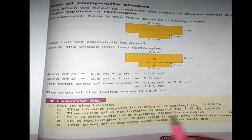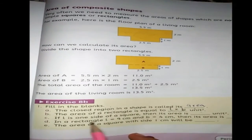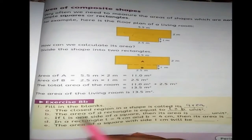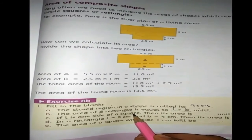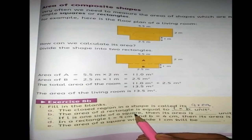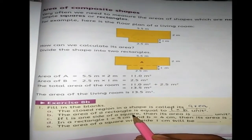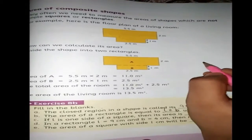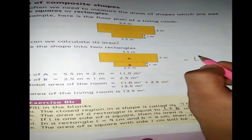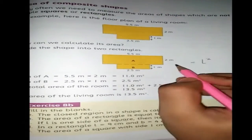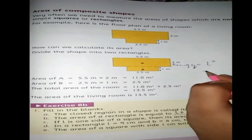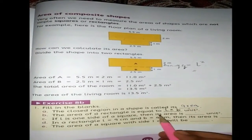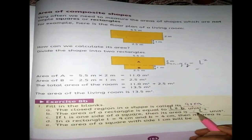Statement 3: if L is one side of a square, then its area is dash. We have not yet formally studied the formula for area of square in today's class — we read the area of rectangle — but the area of square is equal to L squared. This is the formula for area of square, and we will use it in our next class.